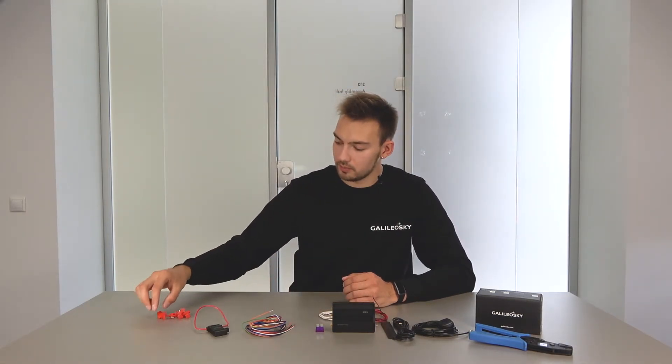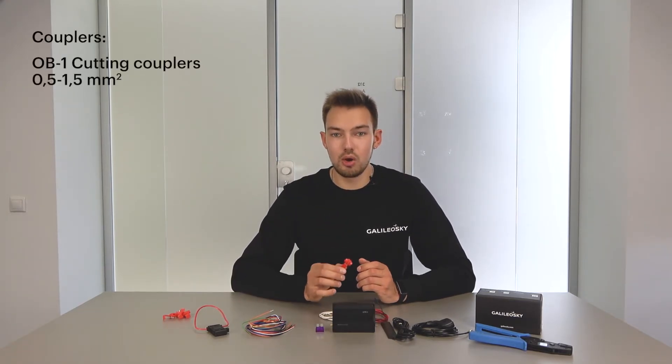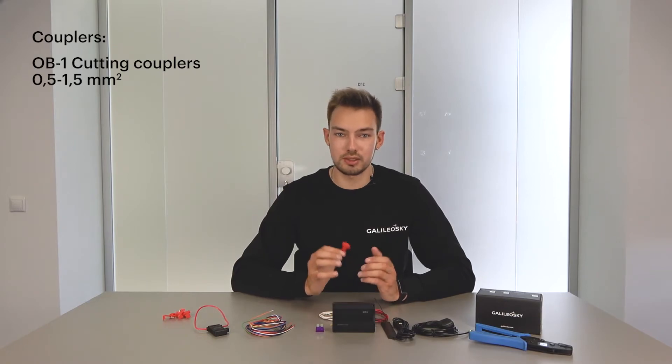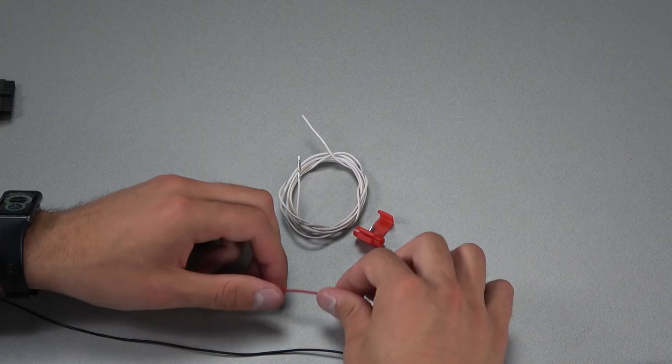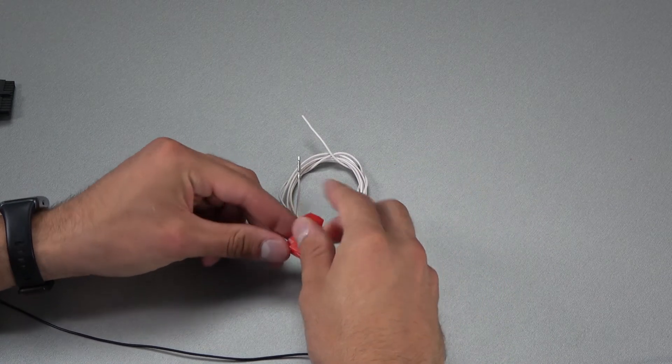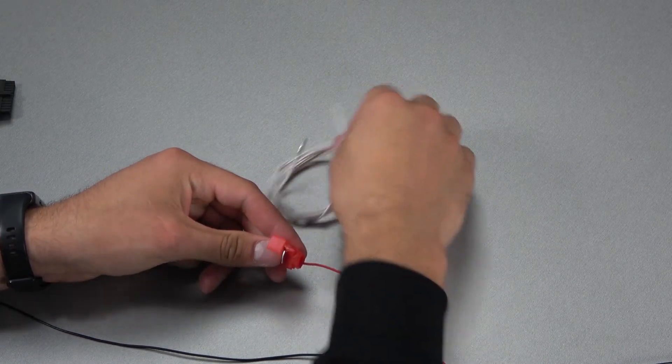You'll need special couplers. Like this. There are several different sizes of it, but now we'll use the small one. As an example, we took a coupler designed for wires with a cross section of 0.5 to 1.5 square millimeters. These tabs are easy to install. They have special places to mount a pair of wires.